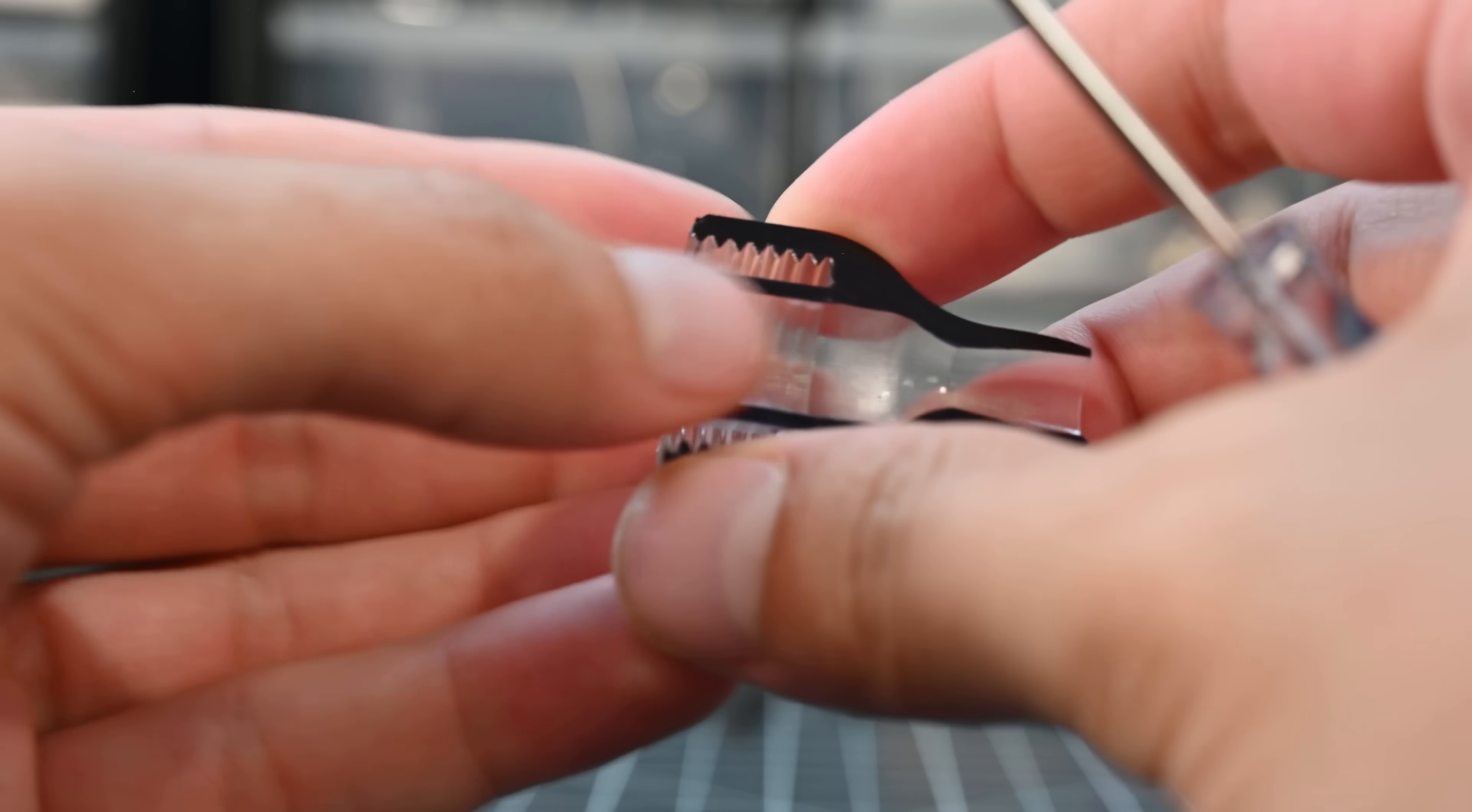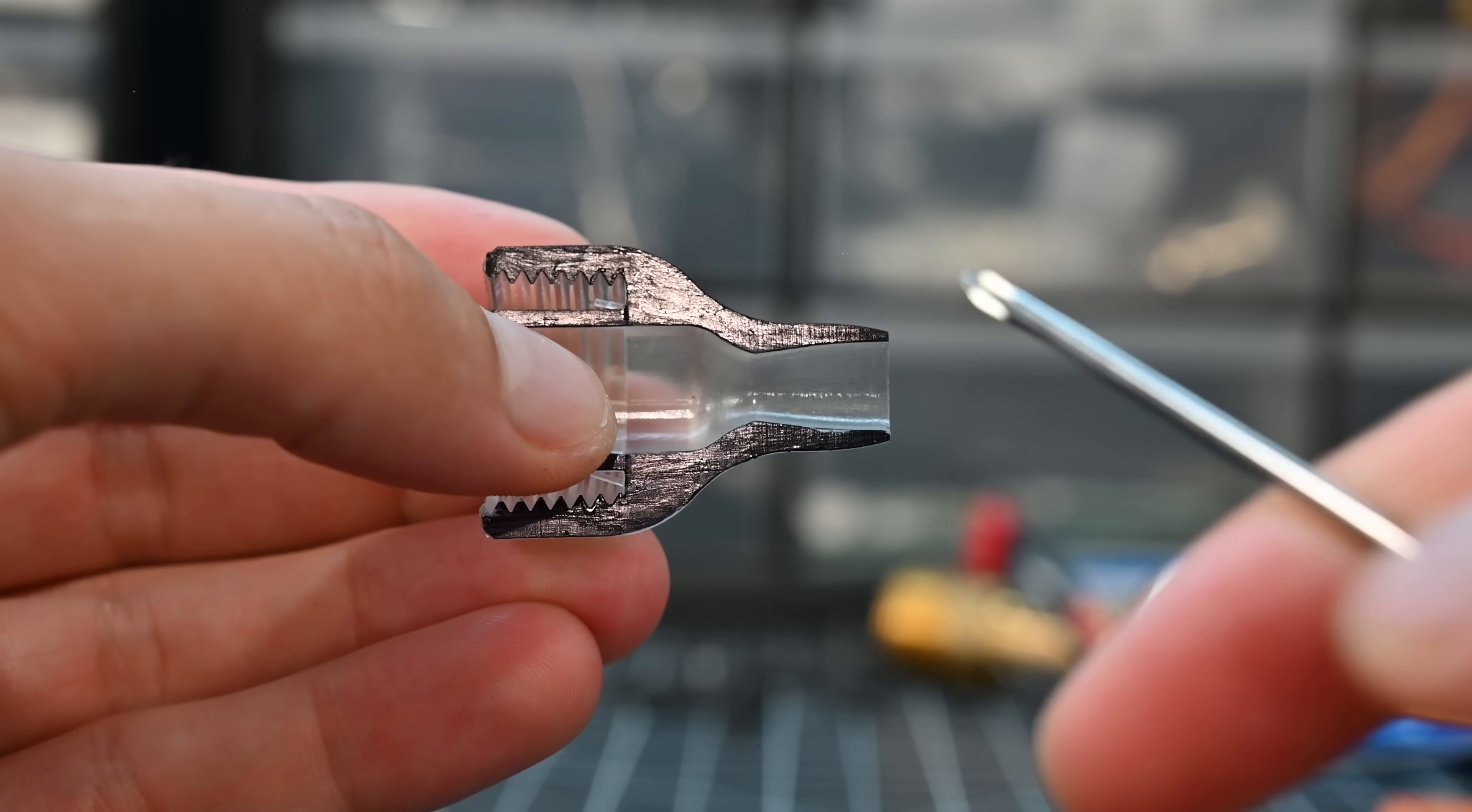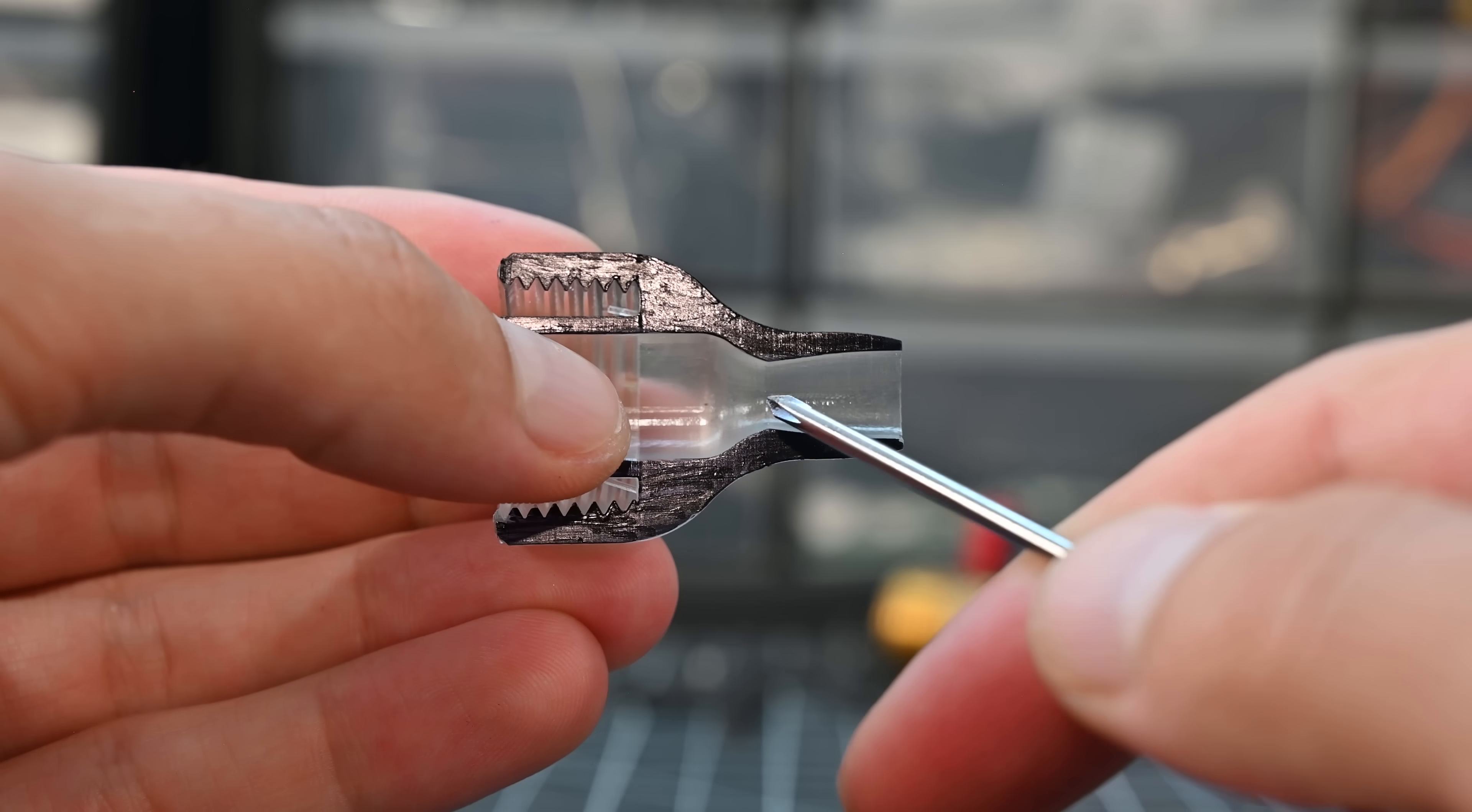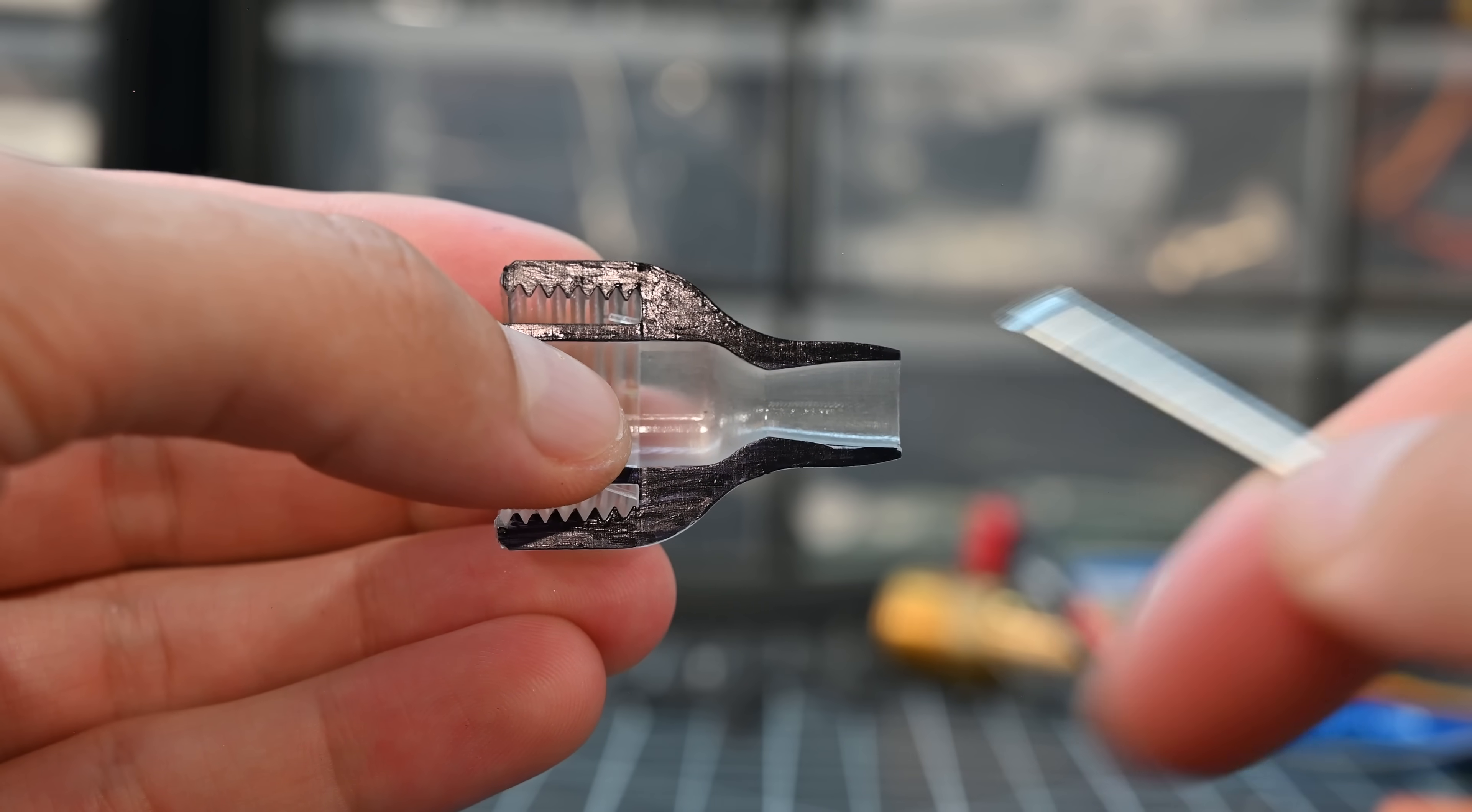To solve this, we can use a bell nozzle. This nozzle straightens out at the end and keeps all the flow moving in the axial direction. Will this actually be any better, though? Let's find out.